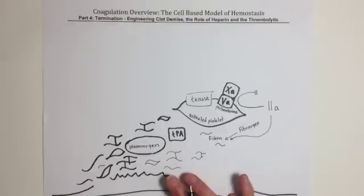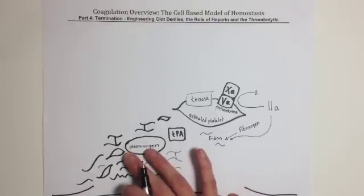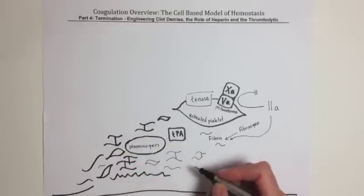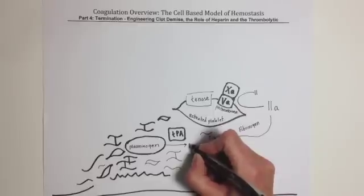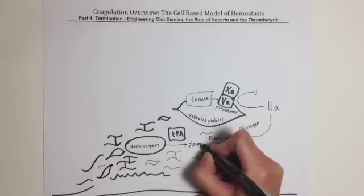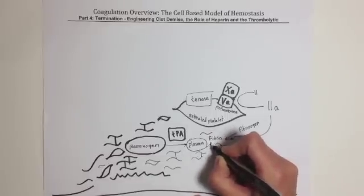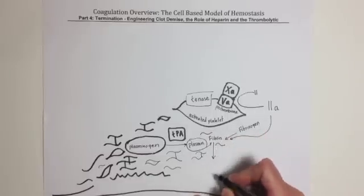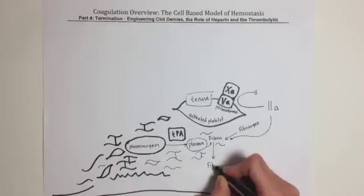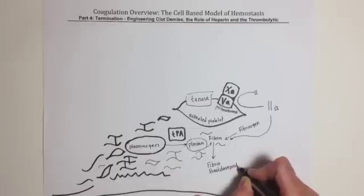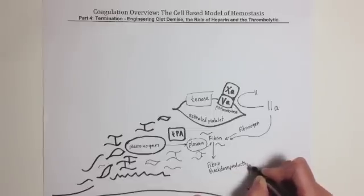Specifically in termination, the enzyme plasminogen comes in contact with TPA or tissue plasminogen activator to form the enzyme plasmin. Plasmin then interacts with fibrin, degrading it into what we call fibrin breakdown products or fibrin degradation products.